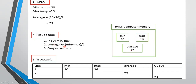To work out the average, we need to add what is in the minimum memory location and the maximum memory location, then divide by two. The instruction is: go to min (value 20), go to max (value 26), add them, divide by two, and store it in another memory location called average. When you output, you output the value in that memory location. These are called variables — they refer to memory locations where values are stored. This pseudocode works for any set of values.